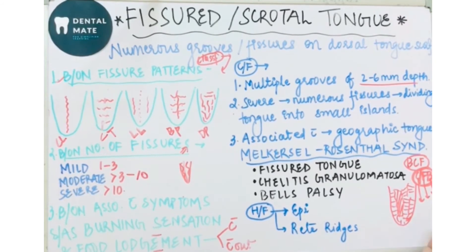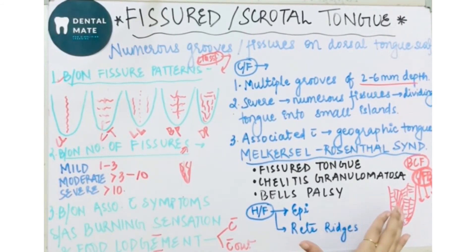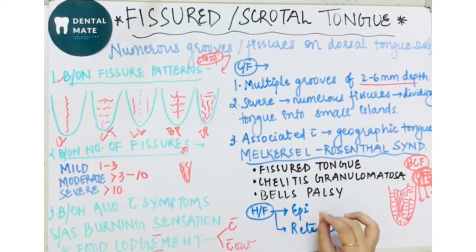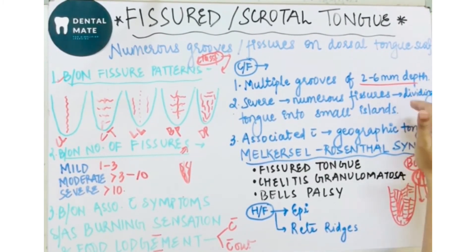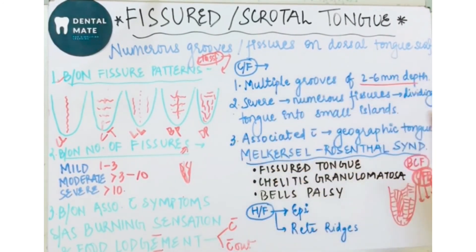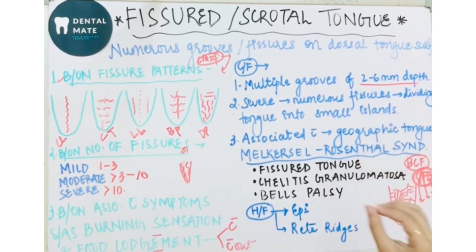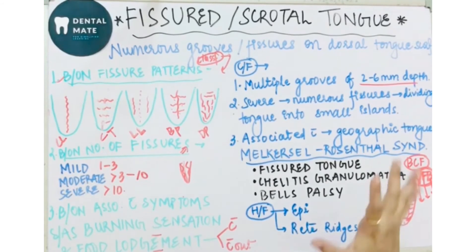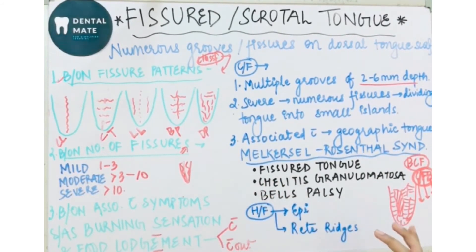Coming on to the histopathological features of fissured tongue. In oral pathology, when writing histopathological features, follow a sequence — starting from the superficial layer of epithelium going down through epithelium, rete ridges, connective tissue, and sub-mucosa, or vice versa. Follow a consistent sequence when writing histopathological features.